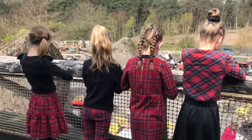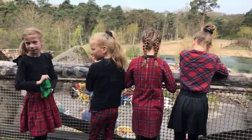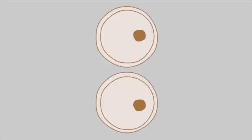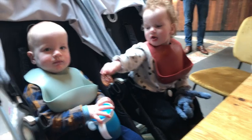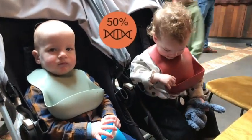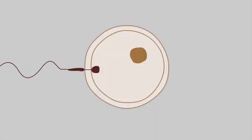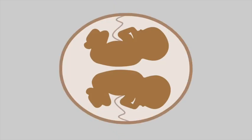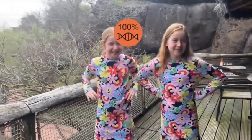The classical twin design compares traits or disease resemblances in monozygotic twins to those in dizygotic twins. Dizygotic twins come from two fertilized eggs and share 50% of their genes on average, just like other siblings. Monozygotic twins come from one fertilized egg, after which the embryo splits. Thus, monozygotic twins are genetically identical.